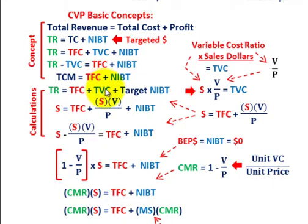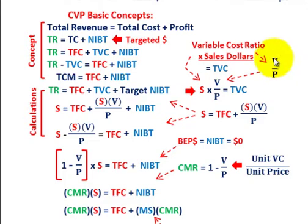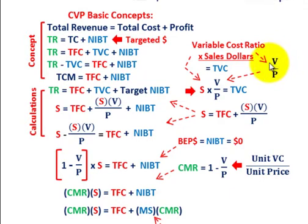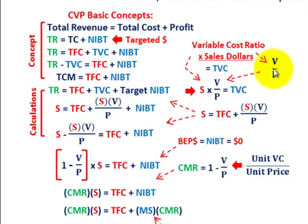To bring this down into dollar terms, we set up our equation for total variable cost. That's going to be the variable cost ratio — the per unit variable cost divided by the per unit price. That ratio times our sales dollars equals our total variable cost. So: sales dollars times (V divided by P) — that contribution margin ratio — equals our total variable cost.